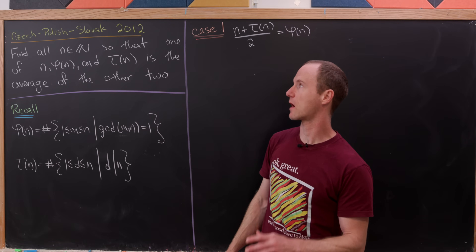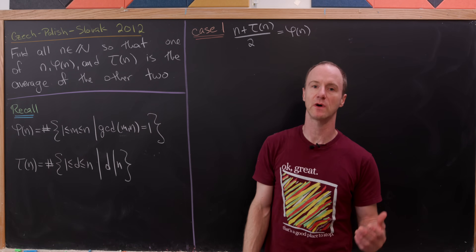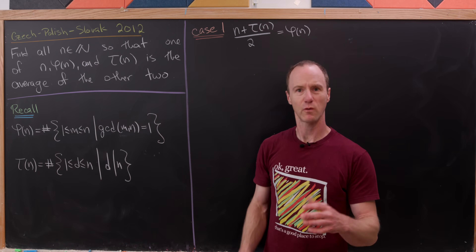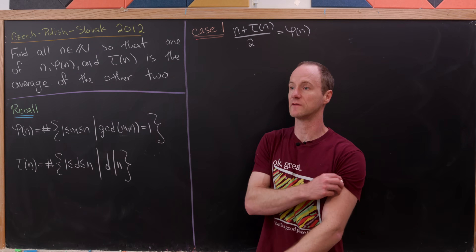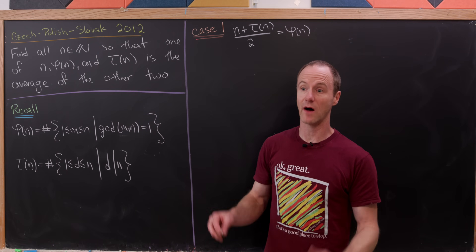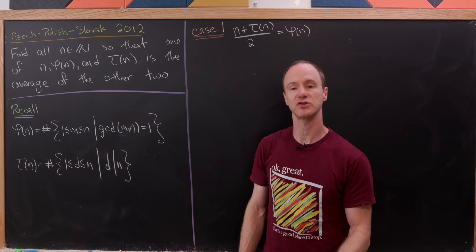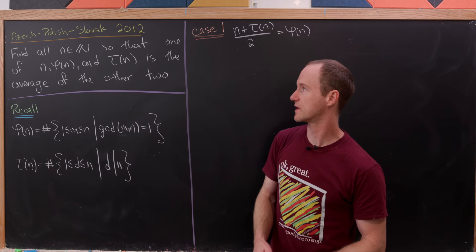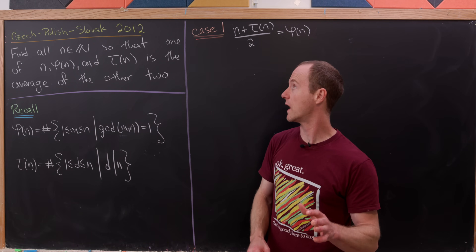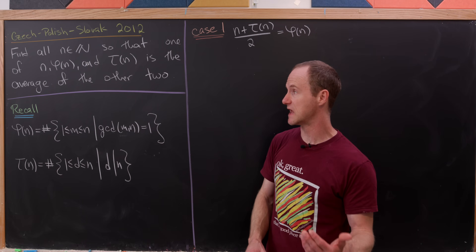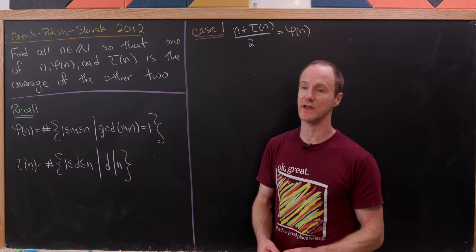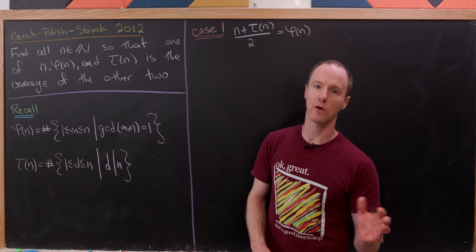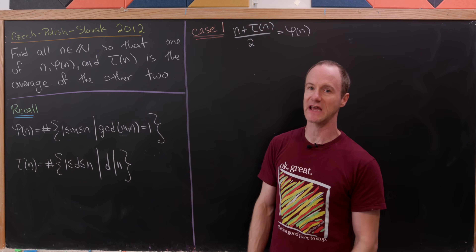Today we're looking at a pretty cool number theory problem from the 2012 Czech-Polish-Slovak Math Olympiad. What I think is cool about it is it involves two commonly studied arithmetic functions. Our goal is to find all natural numbers n so that one of the numbers n, φ(n), and τ(n) is the average of the other two. Let's recall what φ(n) and τ(n) are.